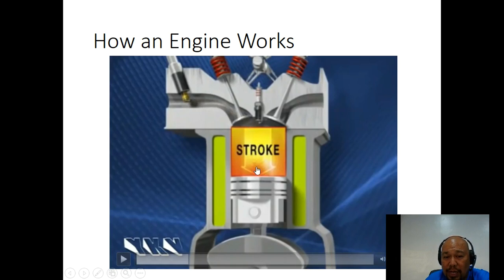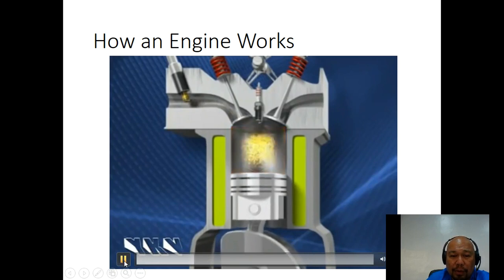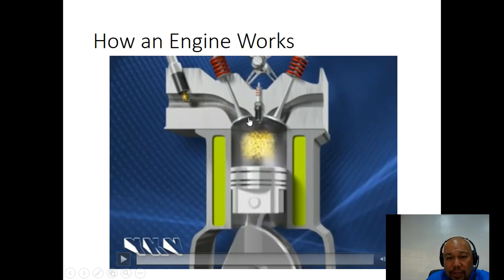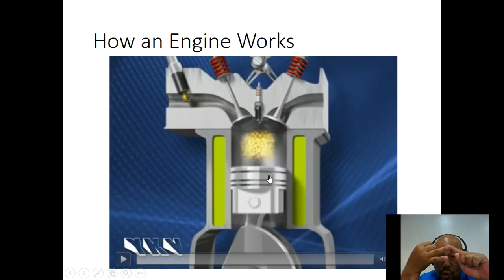When the piston reaches the bottom dead center during the intake stroke, the intake valve closes, and the exhaust valve is still closed. Since it's at the bottom dead center, it has nowhere to go but up. So it starts going up — both valves are closed — and the fuel-air mixture inside the cylinder is being compressed. When moving up with both valves closed, that is called the compression stroke — the second stroke.